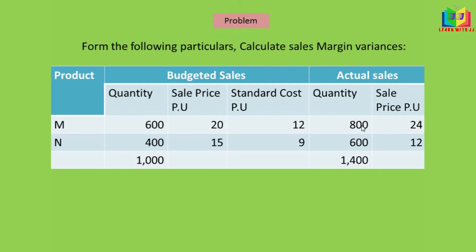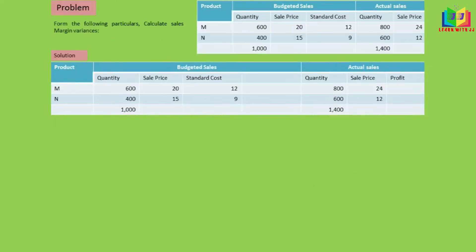The budgeted sales and actual sales quantities are given, along with the selling price per unit for budget, standard cost, and actual selling price. Using this cost and selling price we have to find the profit in order to work out the sales margin variance. The first step is to find out the profit per unit — both budgeted profit per unit and actual profit per unit.